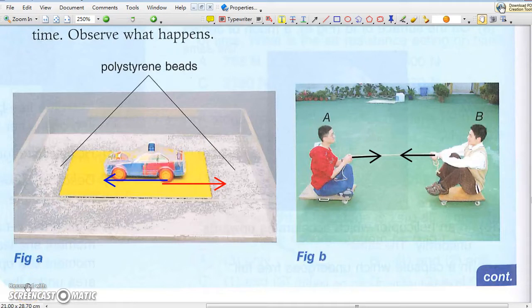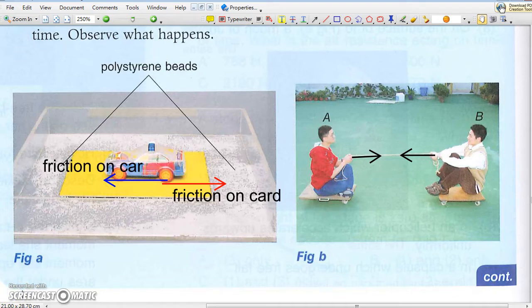In the video, we can see with the polystyrene beads, when the car tries to move forward, the car will produce a backward force on the card. And you can see the car can move forward because there is friction acting on the car in the forward direction.